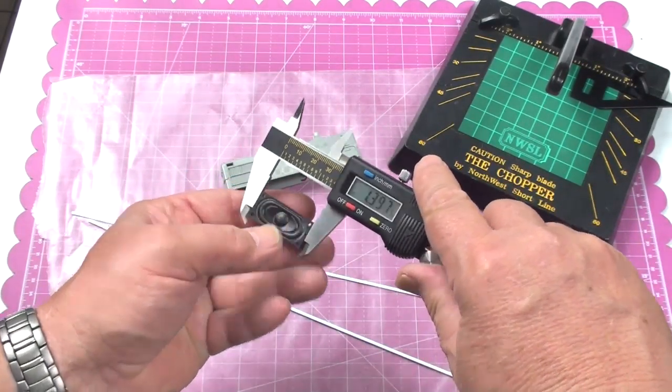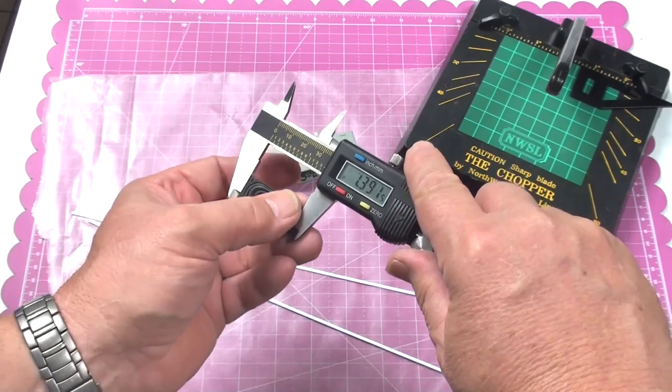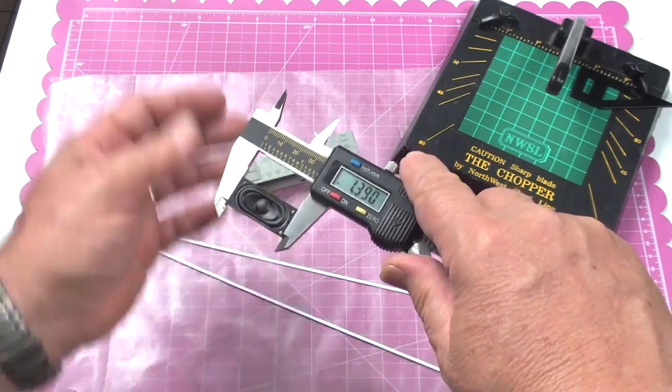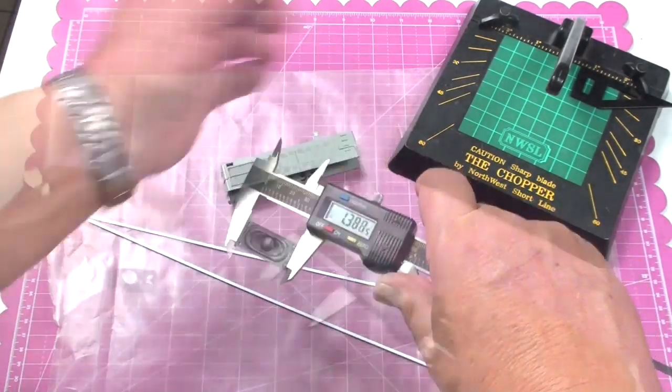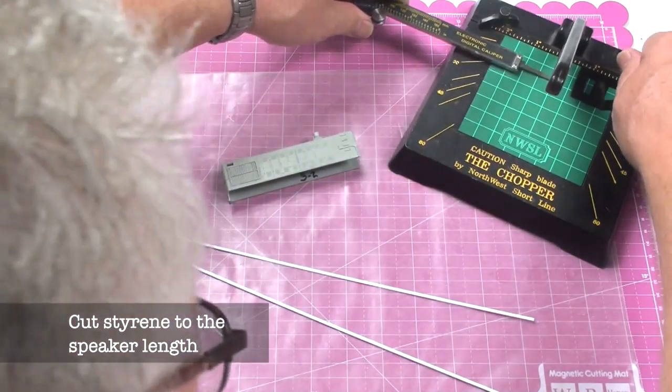Next, I'm going to measure the length of the speaker and cut some strips of white styrene to the dimension of the speaker, the same method that I used in video number one.